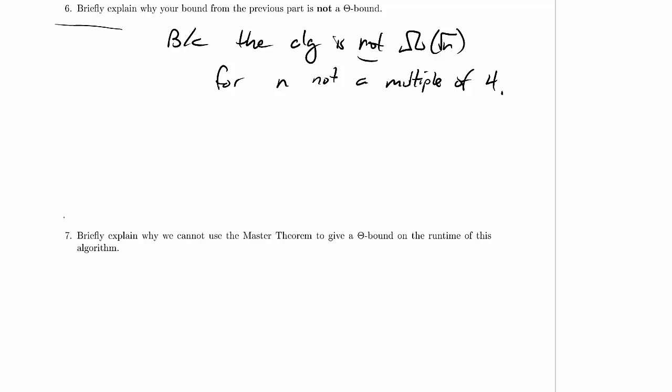Let's move on to the next part, which is to briefly explain why we cannot use the master theorem to give a theta bound on the runtime of this algorithm. Quite honestly, it's the same deal. The master theorem is supposed to be used for recurrence relations that have some set of base cases or a single base case at some constant size.